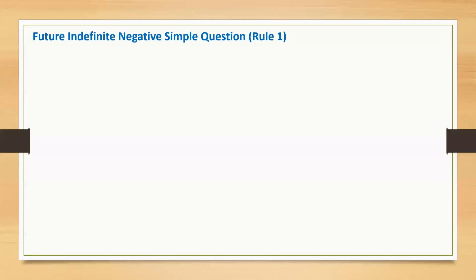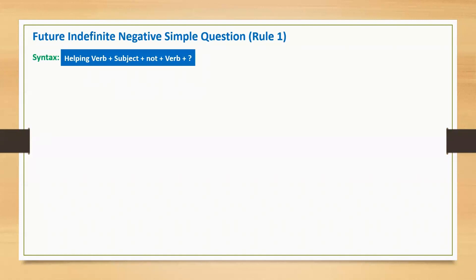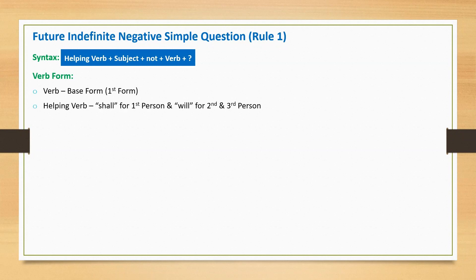It is an interrogative negative statement. As per rule 1, the sentence begins with a helping verb, followed by subject, the word 'not', main verb (base form), and a question mark at the end. Helping verb 'shall' is applicable for first person, and 'will' is applicable for second and third person.